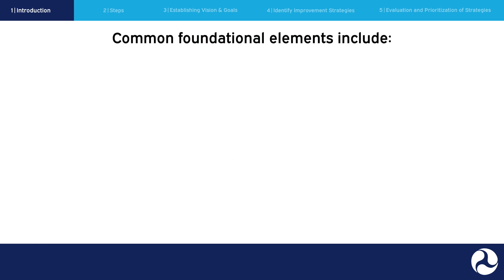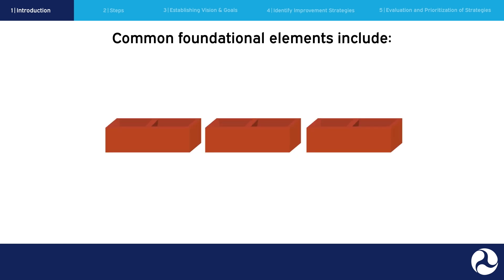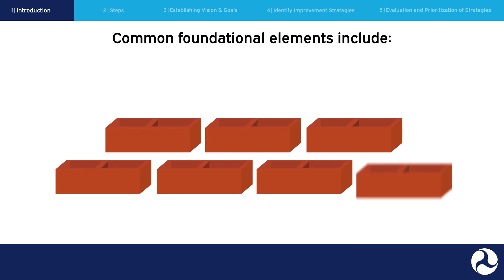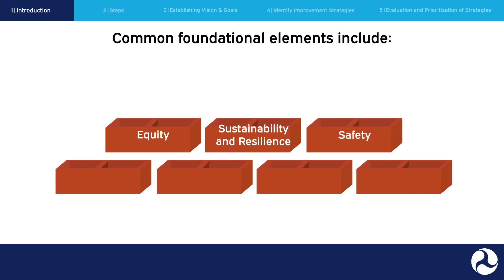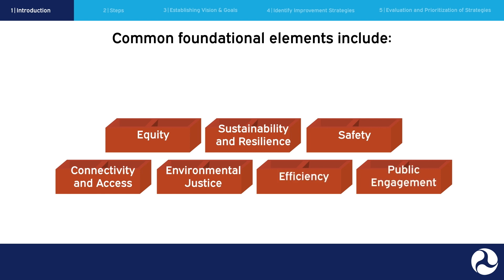In addition to these typical steps, there are common issues that run through the planning process. These can serve as benchmarks for each step of the process. Common foundational elements include equity, sustainability and resilience, safety, connectivity and access, environmental justice, efficiency, and public engagement. All planning activities should take these issues into consideration and incorporate them into the planning process. As we progress, we will highlight these issues within each step of the planning process.